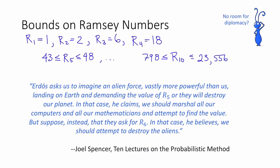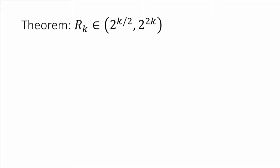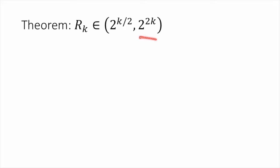Here's a quote I like from Joel Spencer's Ten Lectures on the Probabilistic Method that just about sums it up. So figuring out what Ramsey numbers are is pretty tricky. Even though it's a hard problem to compute Ramsey numbers exactly, we can get some bounds via the probabilistic method. We're going to prove that the kth Ramsey number is larger than 2 to the k over 2 and smaller than 2 to the 2k. These are not super sharp bounds — for example, these pin down r5 between 6 and 1024. However, it does establish that the dependence on k must be exponential.